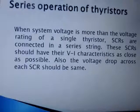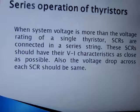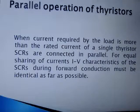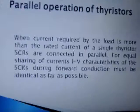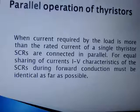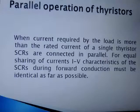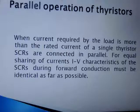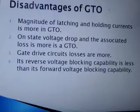Series operation is required when the supply voltage is very high for a single SCR to sustain. We connect two SCRs in series so that we can apply a higher supply voltage. The condition is that both SCRs must have similar VI characteristics to operate in series. Parallel operation is required when the load current exceeds the rated current of a single SCR. Similarly, both SCRs connected in parallel must have similar VI characteristics; otherwise, more current will flow through one SCR and less through the other.